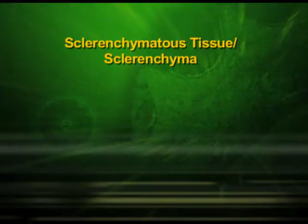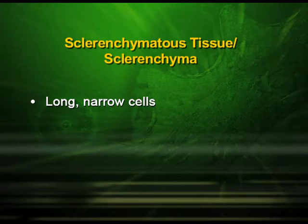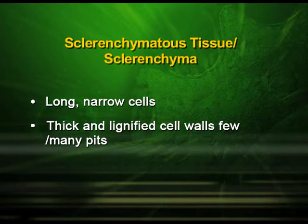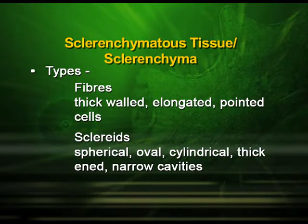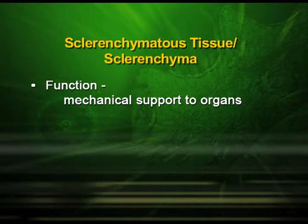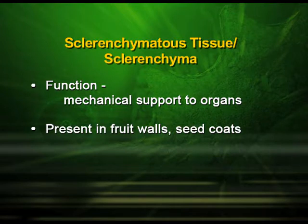The next simple tissue is sclerenchyma. Sclerenchymatous cells are long, narrow cells with thick, lignified walls, and their walls have few or many pits — holes present in them. They are of two types: the fibers, which are thick-walled, elongated, pointed cells; and the sclerids, which may be spherical, oval, or cylindrical with thickened walls and narrow cavities. Their function is to give mechanical support to the organs, and they are found in fruit walls and seed coats.